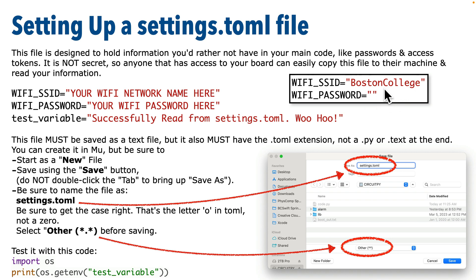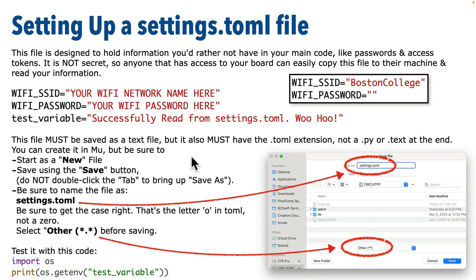For my students on campus, the network name to use is BostonCollege — one word, capital B and capital C — and they should use an empty string for the password, which is just two double quotation marks with nothing between them. That's because in an earlier lesson they registered their Pico's MAC address with the campus network via the Helix server. For home Wi-Fi users, just enter your local Wi-Fi network name and password. We're also going to add a test variable named test_variable with a message we can use to confirm the file is set up properly.